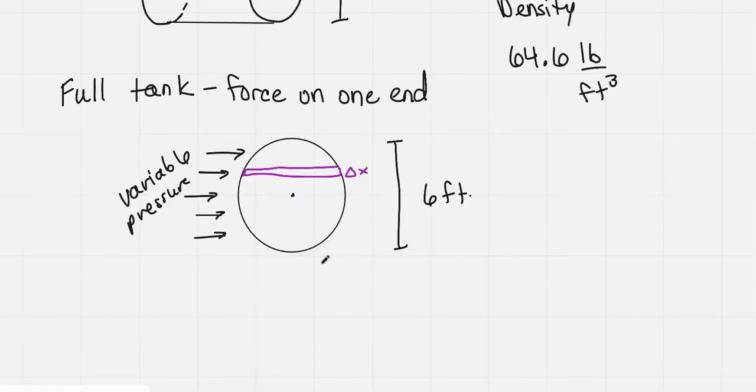For this ith slice, I went a certain depth. I'm going to say I'm going down x sub i star. That's my certain depth I'm going down to get to that ith slice. My pressure formula is equal to rho times g times d, where rho is the density. In this case it's 64.6 pounds per cubic foot.